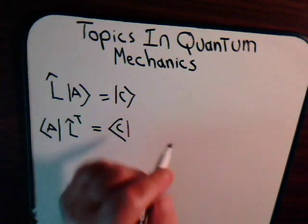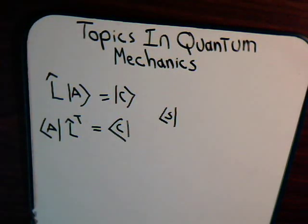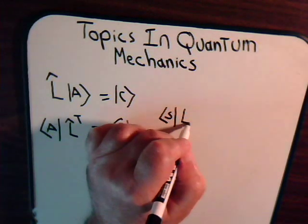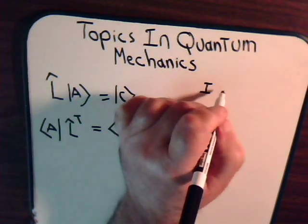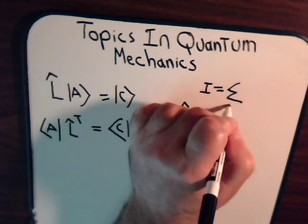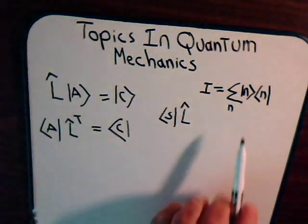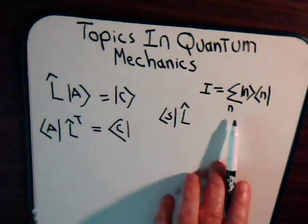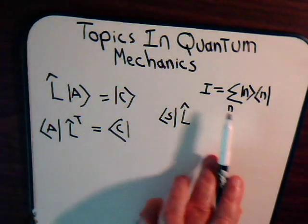Let's say that we have a bra vector, say S, and it's being operated on by a particular linear operator. What exactly does that mean? To help us define this, we invoke, once again, the identity operator, which we established in video number one. These are orthonormal basis vectors, and this is being summed over a dummy variable of summation. As we established in the first video, this is the identity operator.